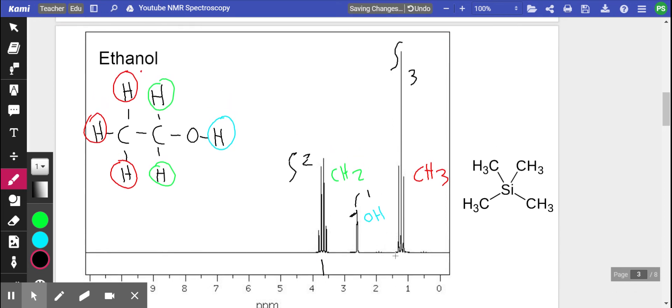So using the data booklet and where the peaks are, you can identify functional groups that are present and you can identify how many of each hydrogen there are. For example, if we integrated this peak of OH and we found two, that would mean there's two alcohol groups. In this case there's only one because it is ethanol, it's not a diol.